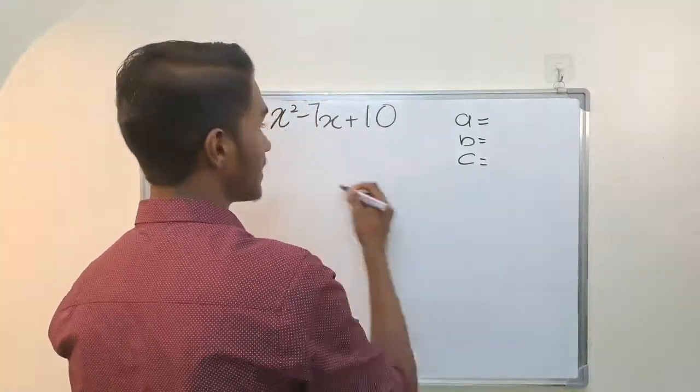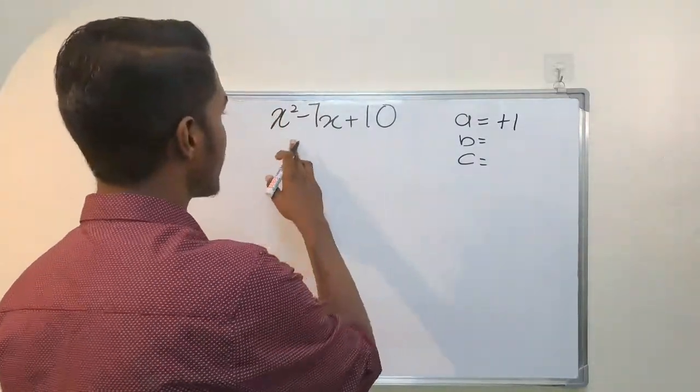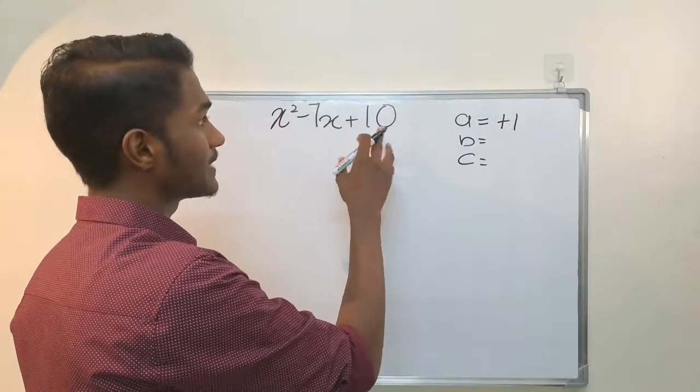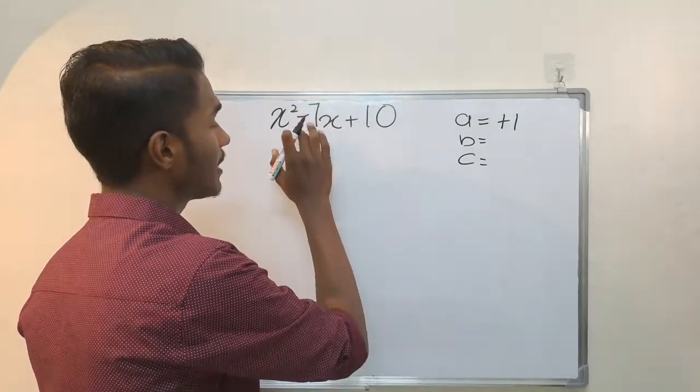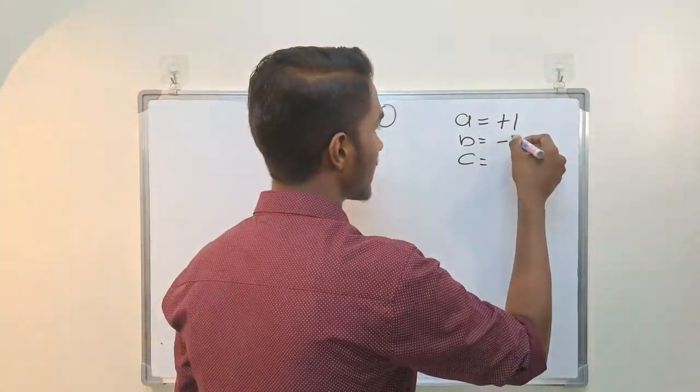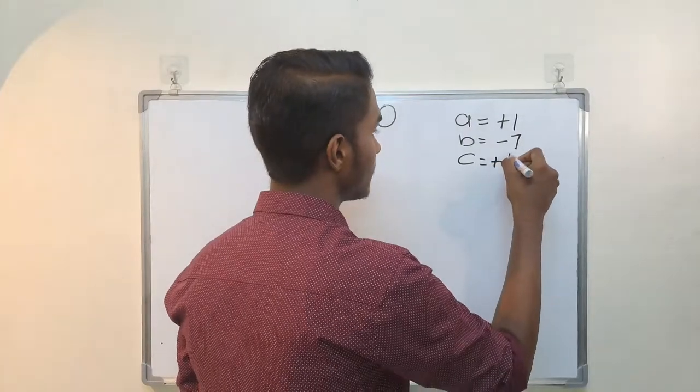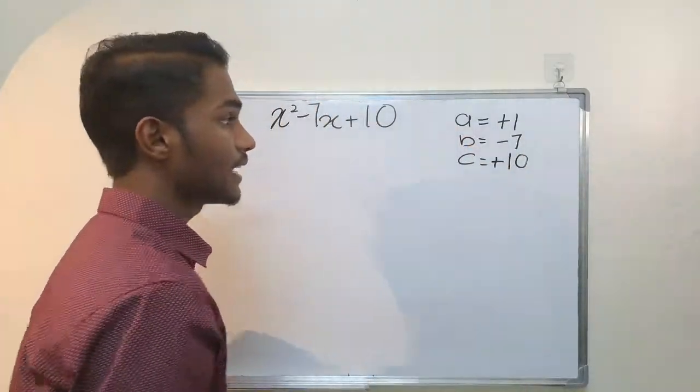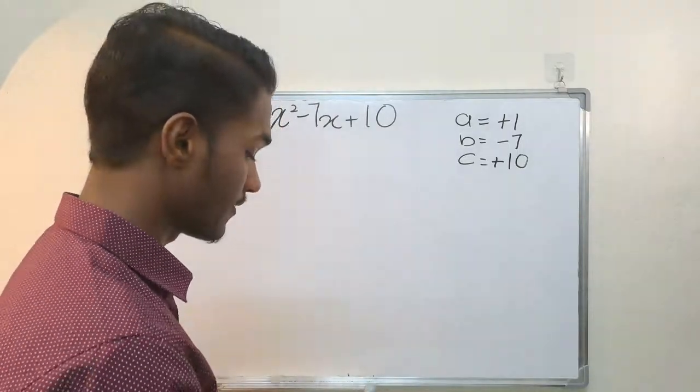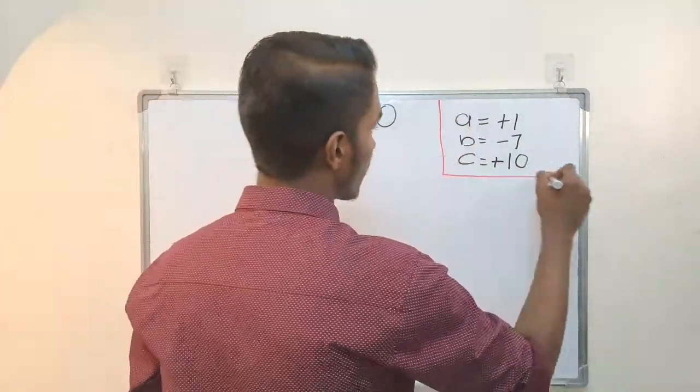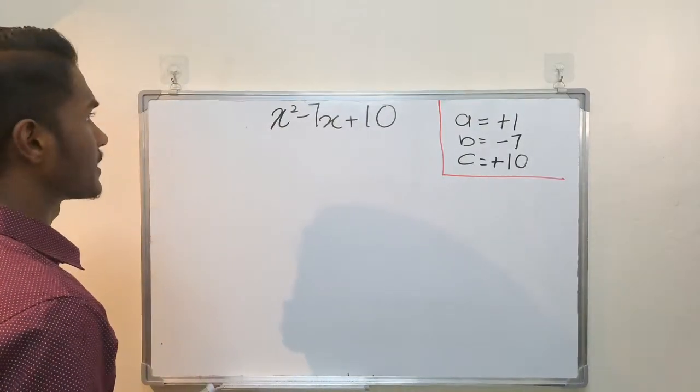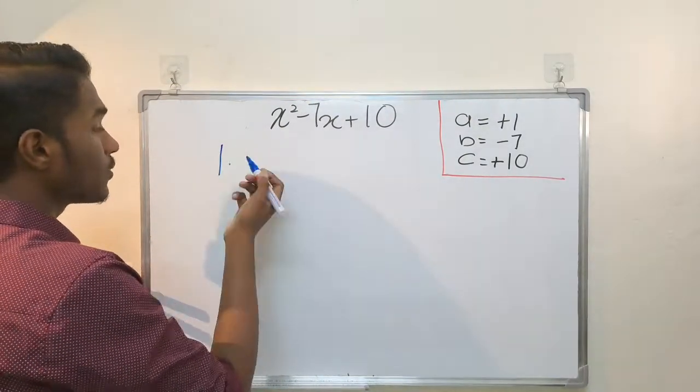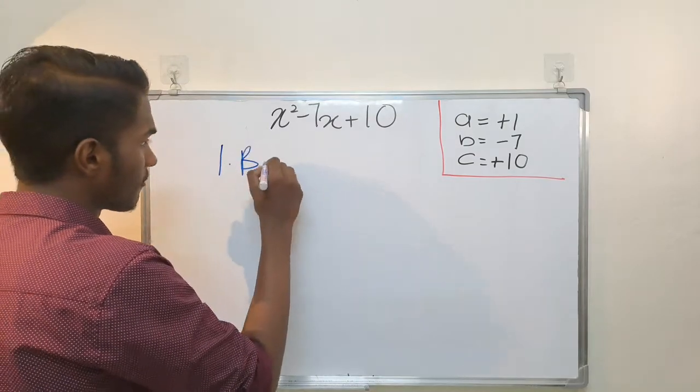Now, this is a positive 1. So ax² plus bx plus c. This plus bx, the b value is negative 7. Now, positive 10. We will use a simple method. So we will get the first step. First step is graph.